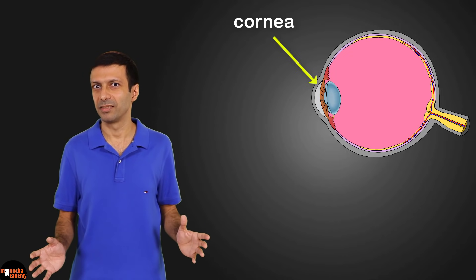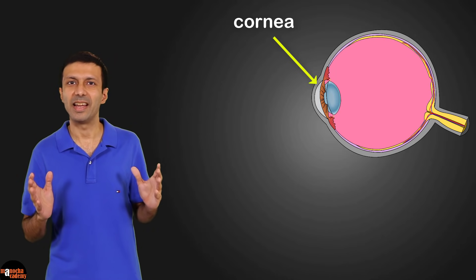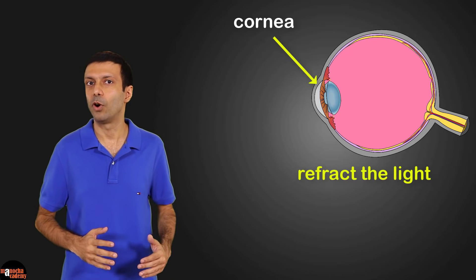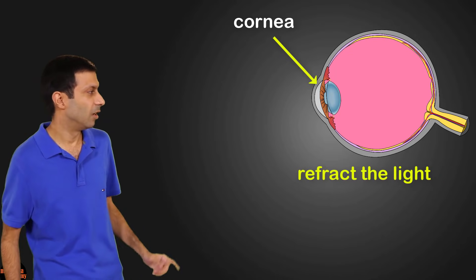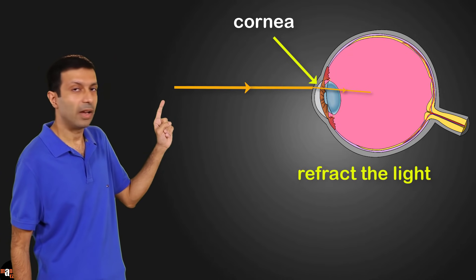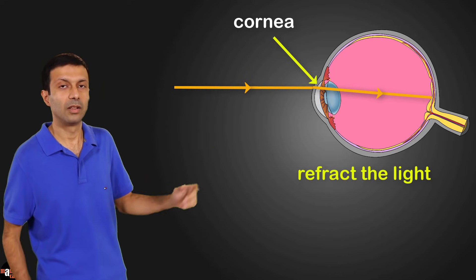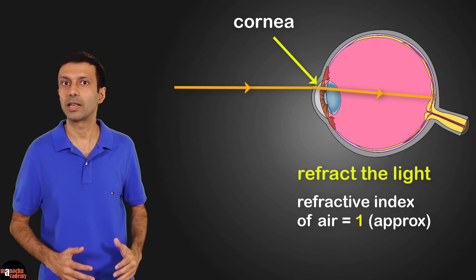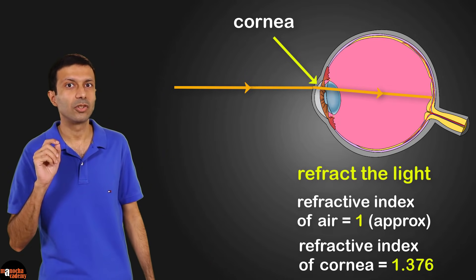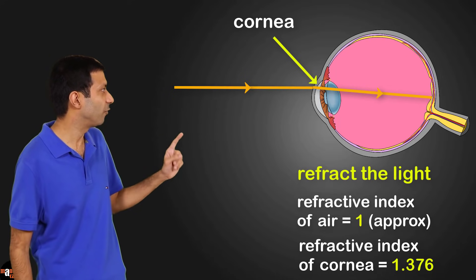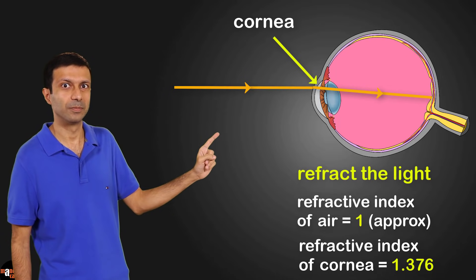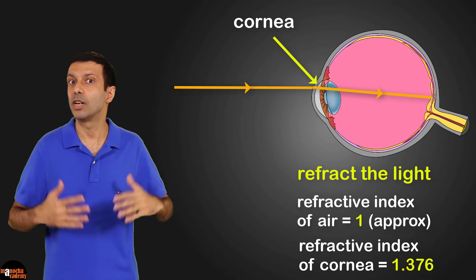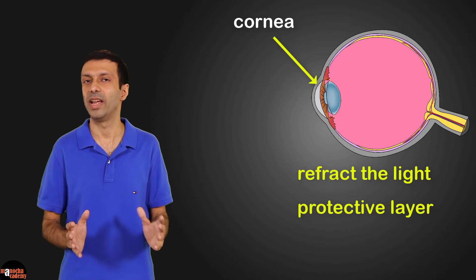The cornea is transparent so that light can enter the eye. The function of the cornea is to refract the light rays to help form an image in the eye. Light enters from air into the cornea — the refractive index of air is approximately 1, and the refractive index of the cornea is 1.376. So light is entering from a rarer to a denser medium, meaning a lot of bending of light happens at the cornea. The cornea also acts as a protective layer of the eye.